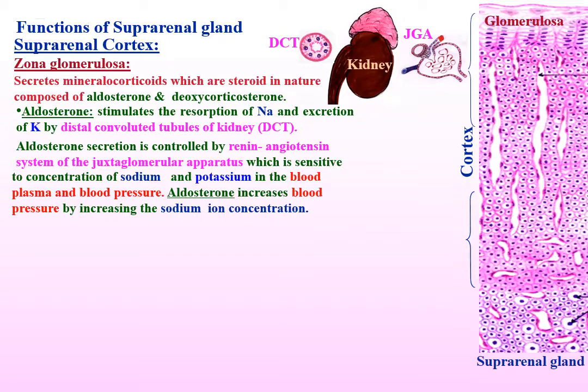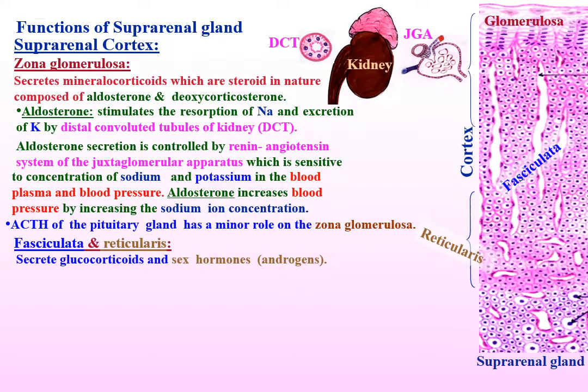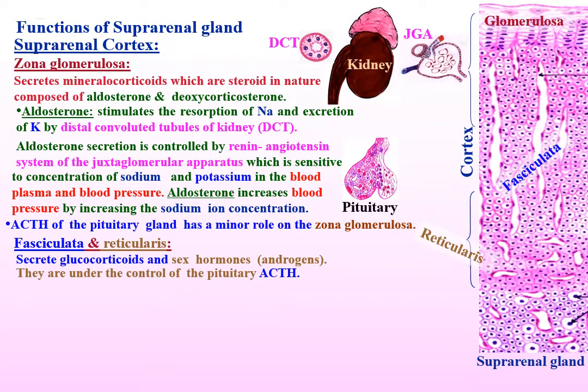Adrenocorticotrophic hormone of the pituitary gland has a minor role on the zona glomerulosa. Zona fasciculata and zona reticularis secrete glucocorticoids and sex hormones. They are under the control of the pituitary adrenocorticotrophic hormone.